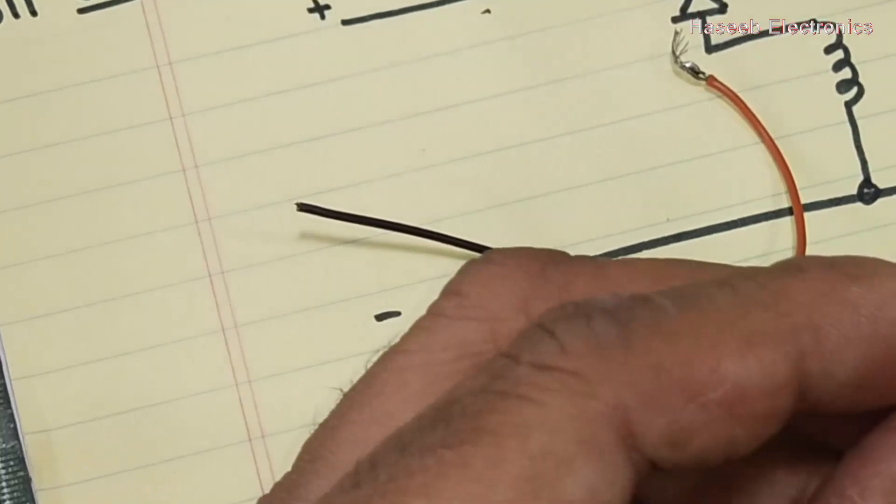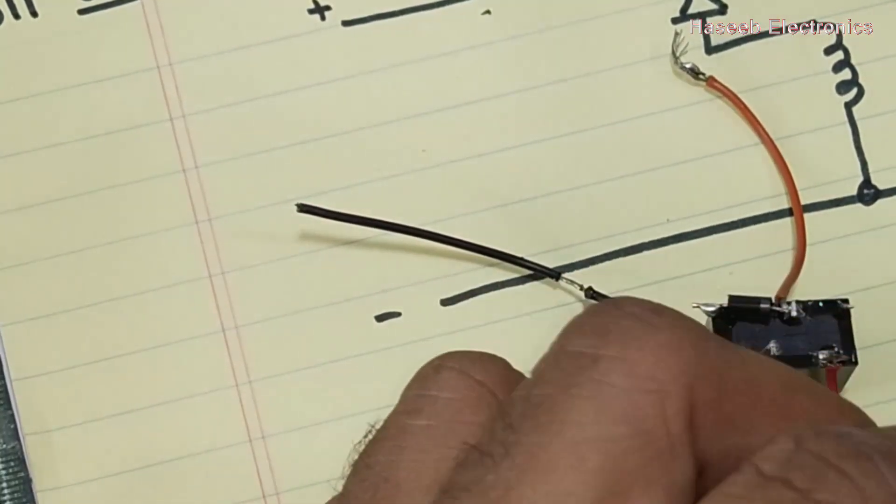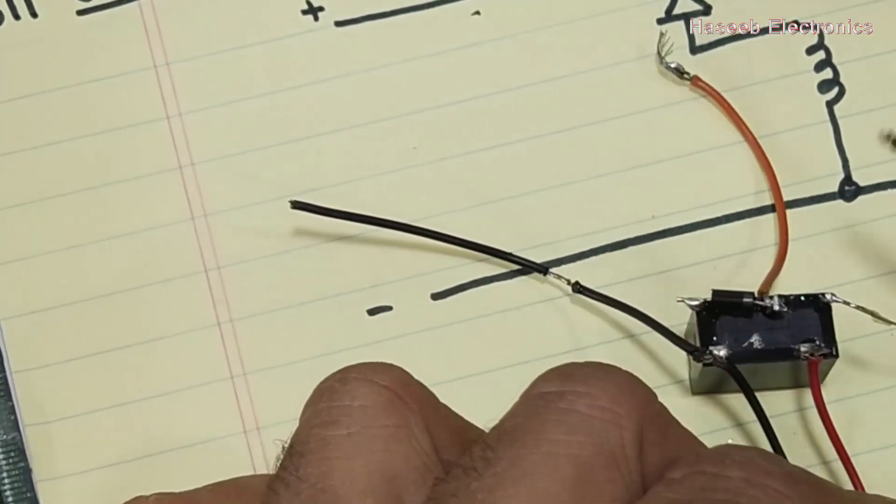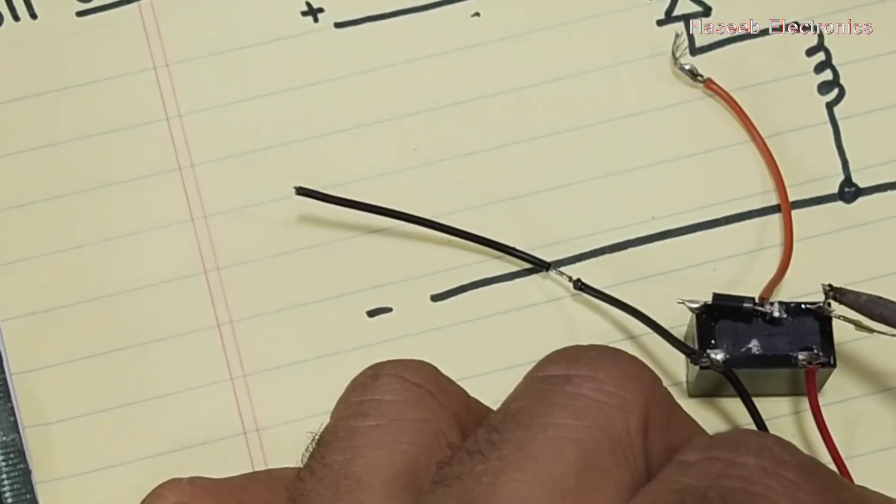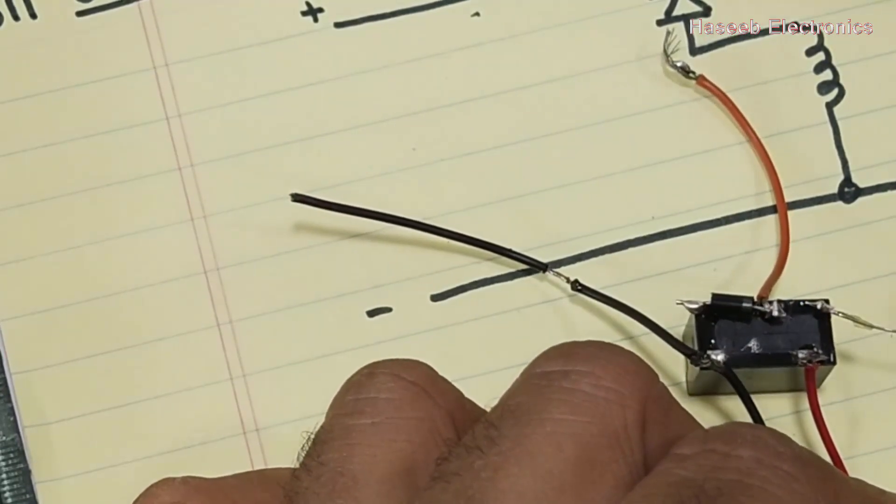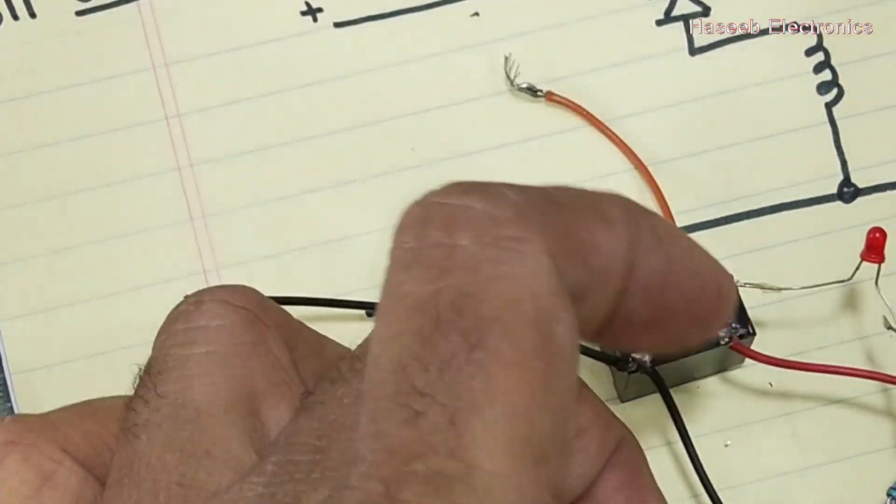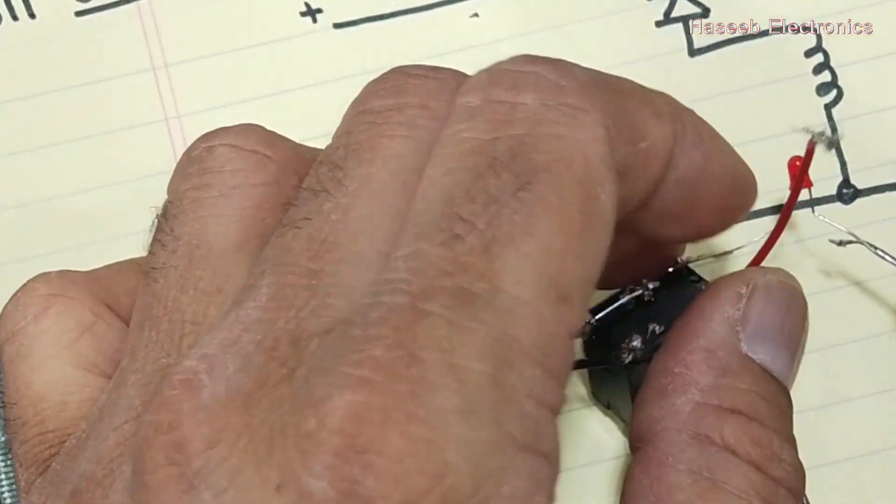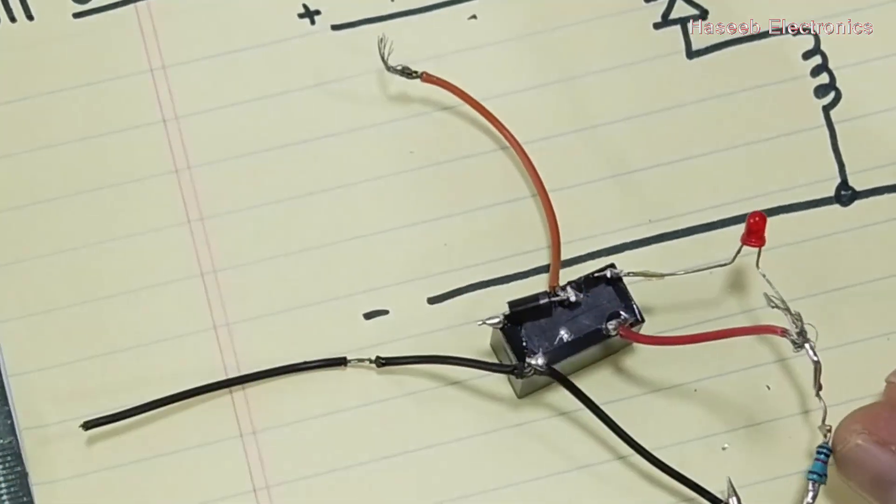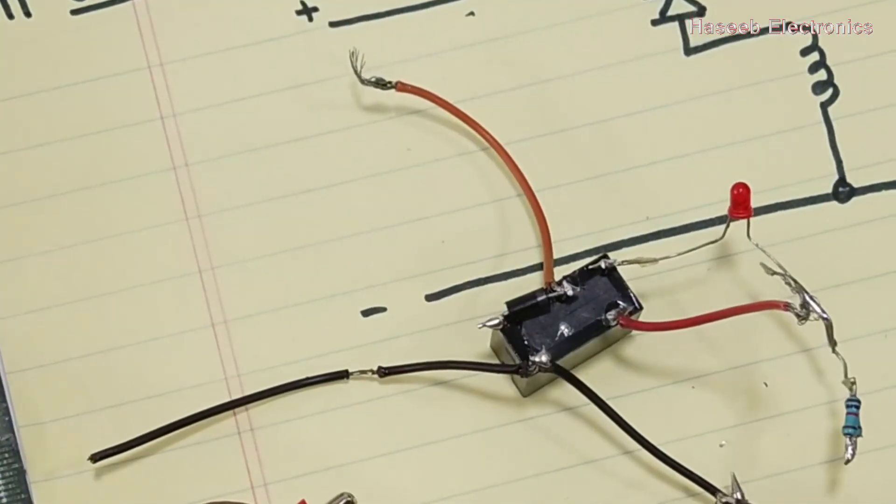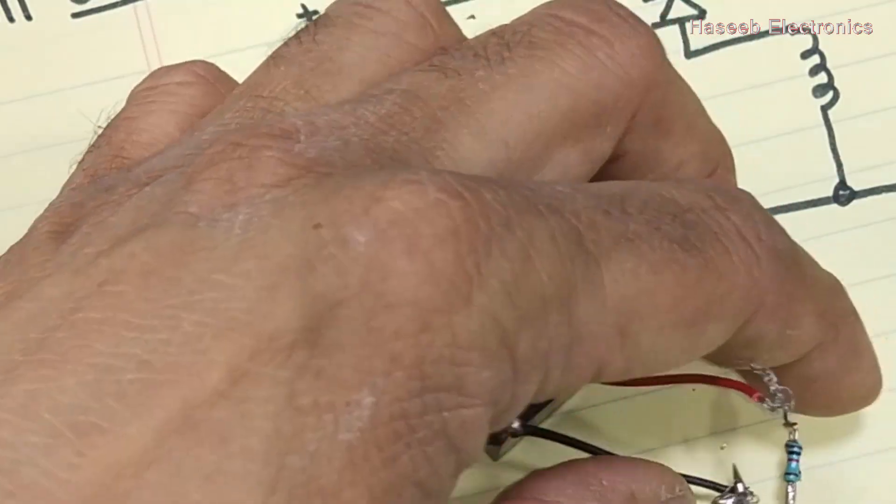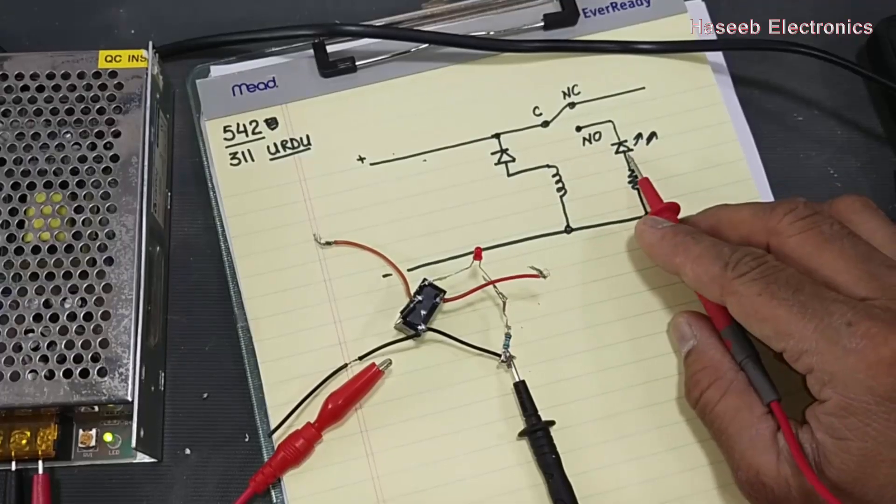We will connect this reverse polarity indicator to the normally open points, so that when the relay will turn on at that time, it will indicate that the polarity is reversed. We will connect this indicator, this LED, between the normally open points and the ground line.